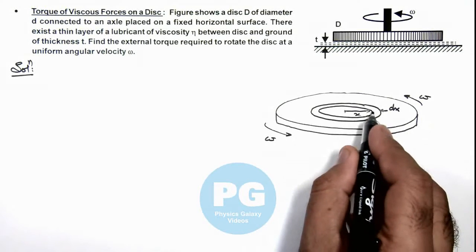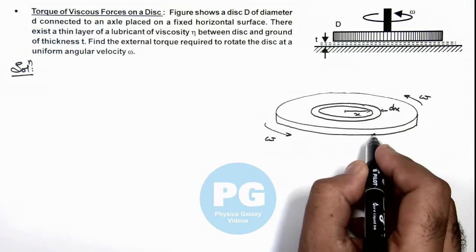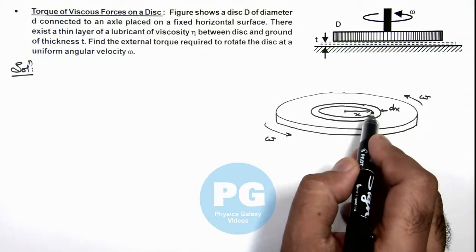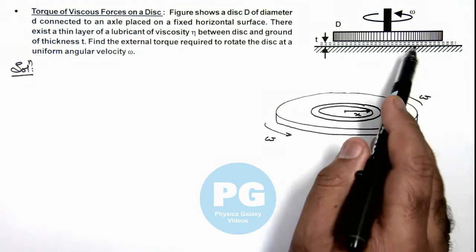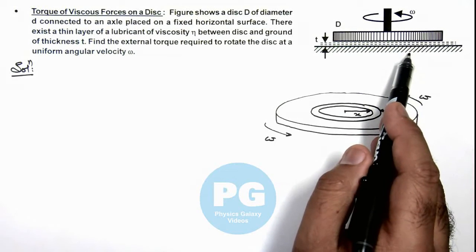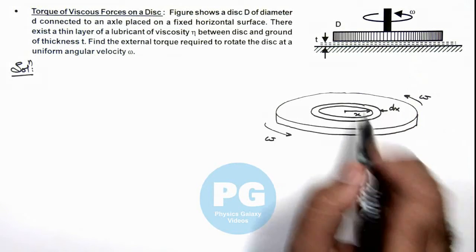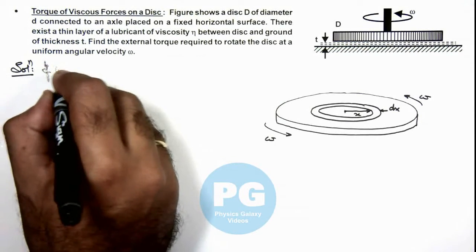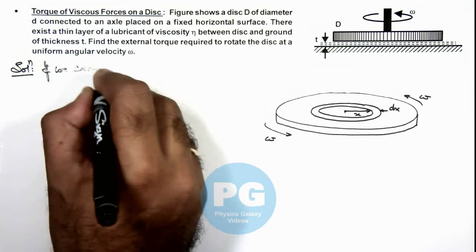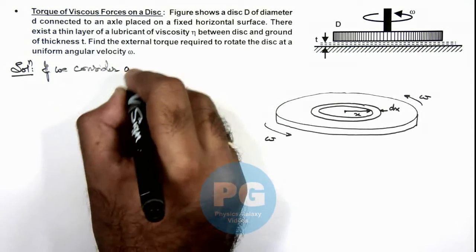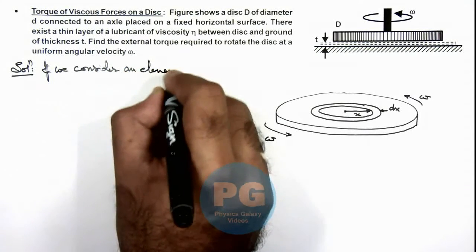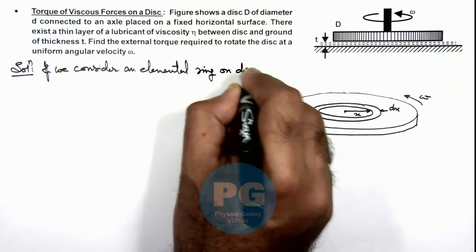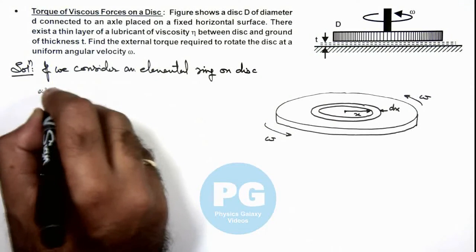So the lubricant which is below this strip would also be moving with the velocity v which is in contact with the disc, and the lubricant which is in contact with the ground will be at rest. So here we can calculate first that if we consider an elemental ring on disc as shown.